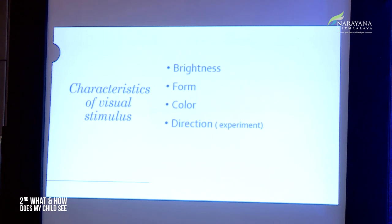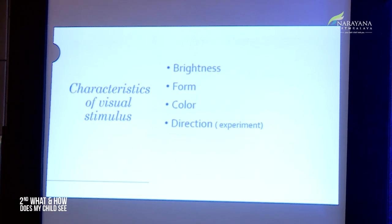Before moving on, let us look at the unique characteristics of any visual stimulus. It has brightness, form, colour, and a unique direction. If I look at a particular target, it stimulates a particular point in each retina, and that point has a particular visual direction — it projects in a direction in physical space in front of it. For example, pressing on the lateral canthus of your eye produces a scotoma on the nasal side, demonstrating the visual direction of each retinal element.